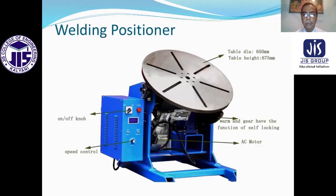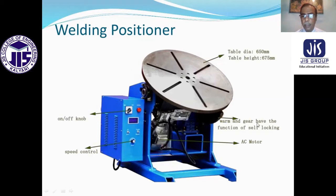Welding positioners and cables are used for better welding. This is the disc where welding is performed, with a knob for on-off control, speed control, DC motor, and a self-locking wheel function.